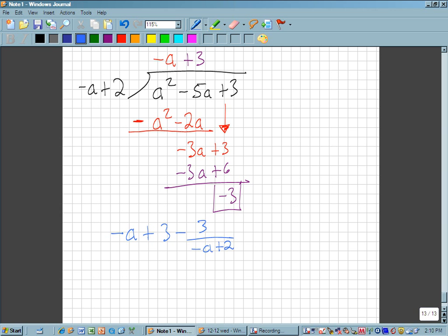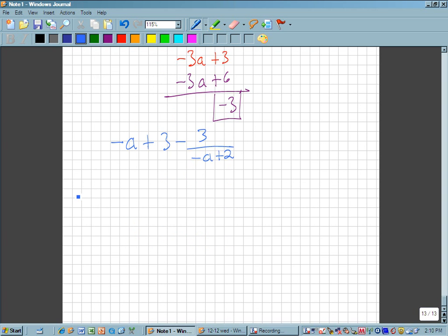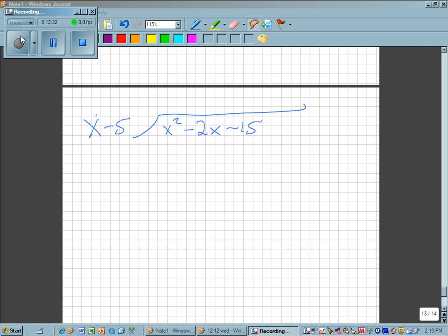Any questions so far? All right, I want you to try one on your own and then we will be finished. Here you have x squared minus 2x minus 15 over x minus 5. So try this one on your own. Let's try this one again.